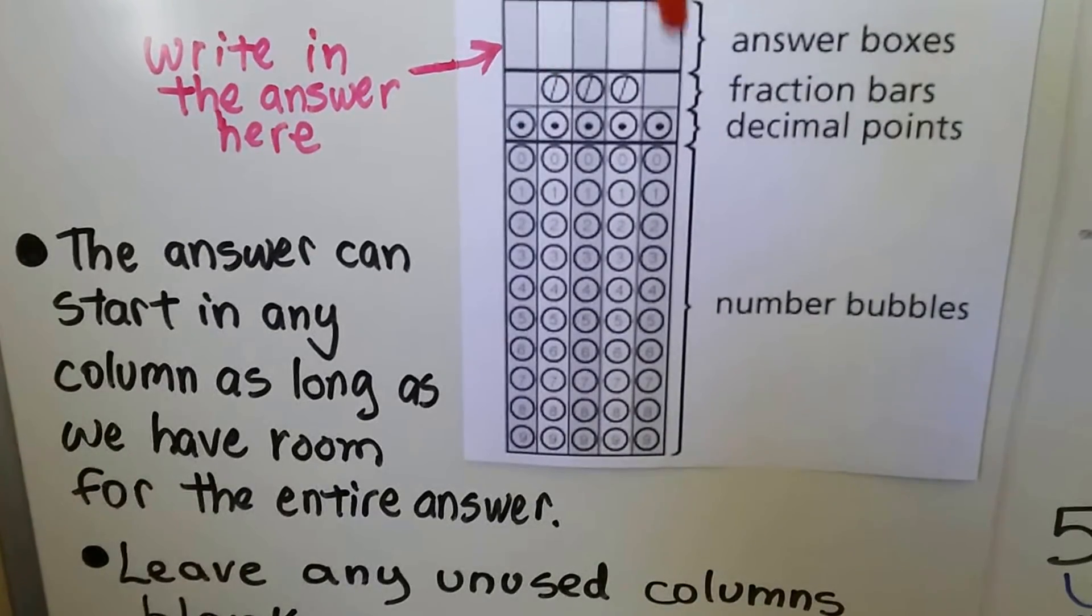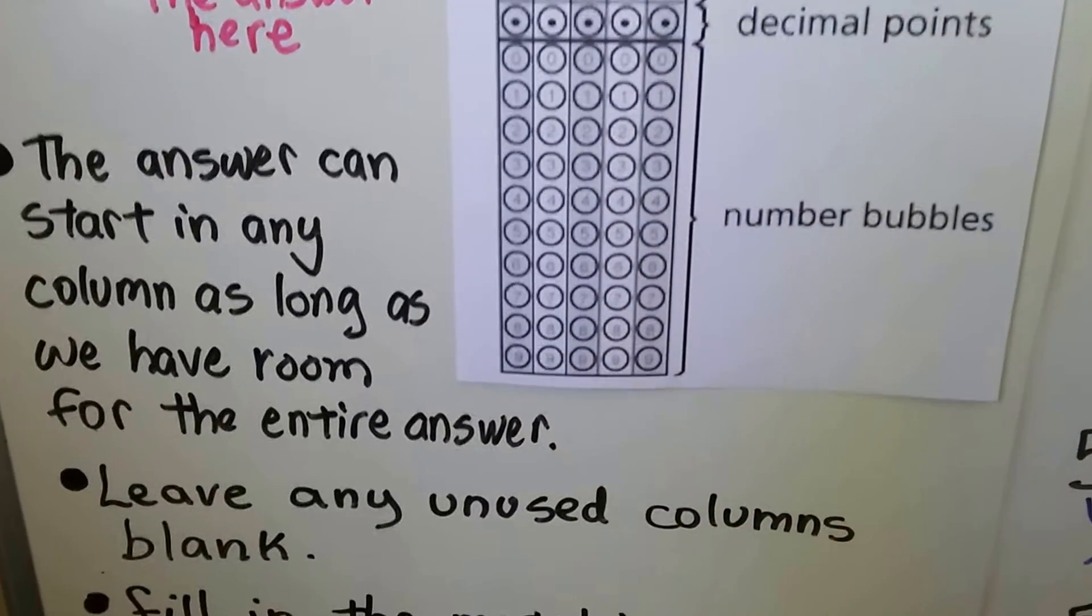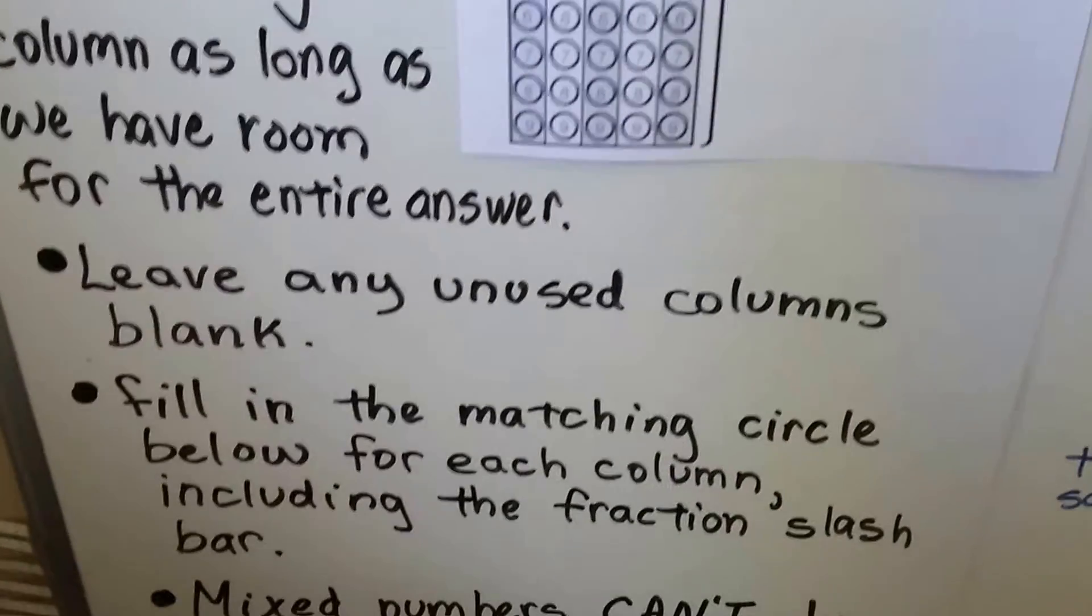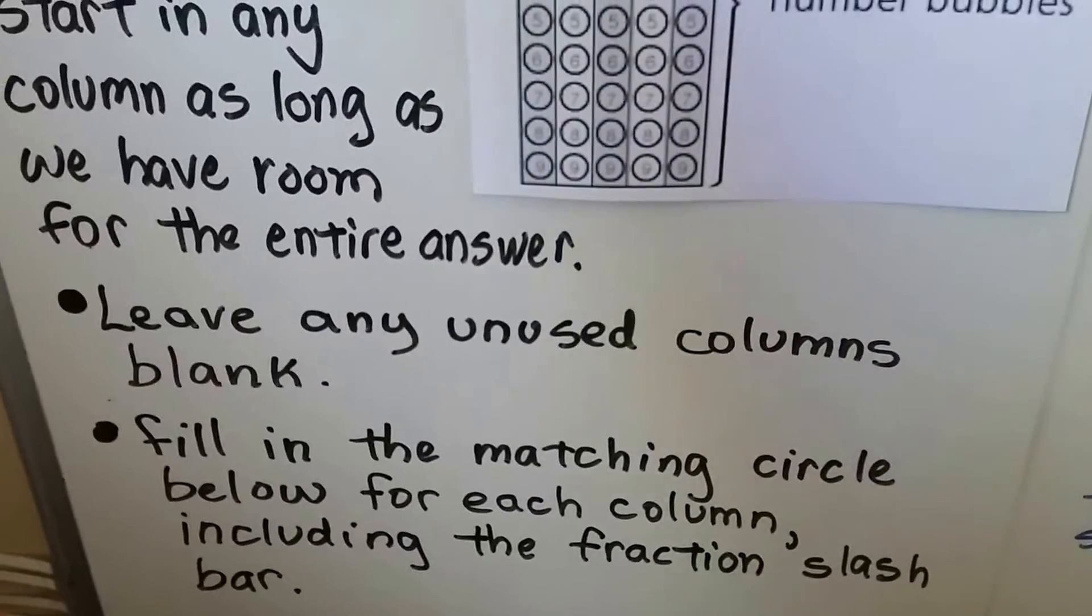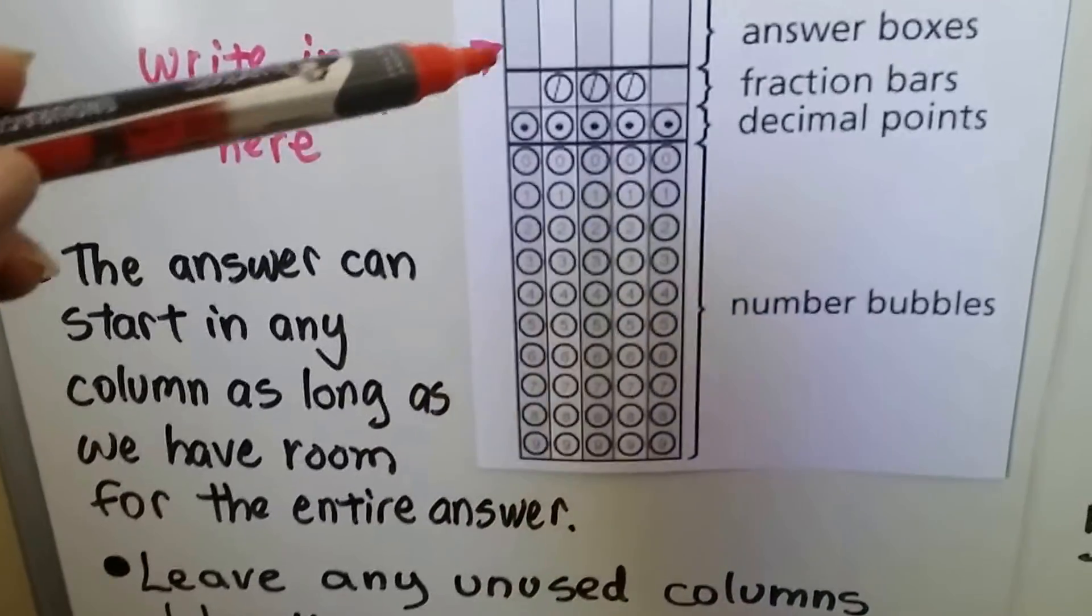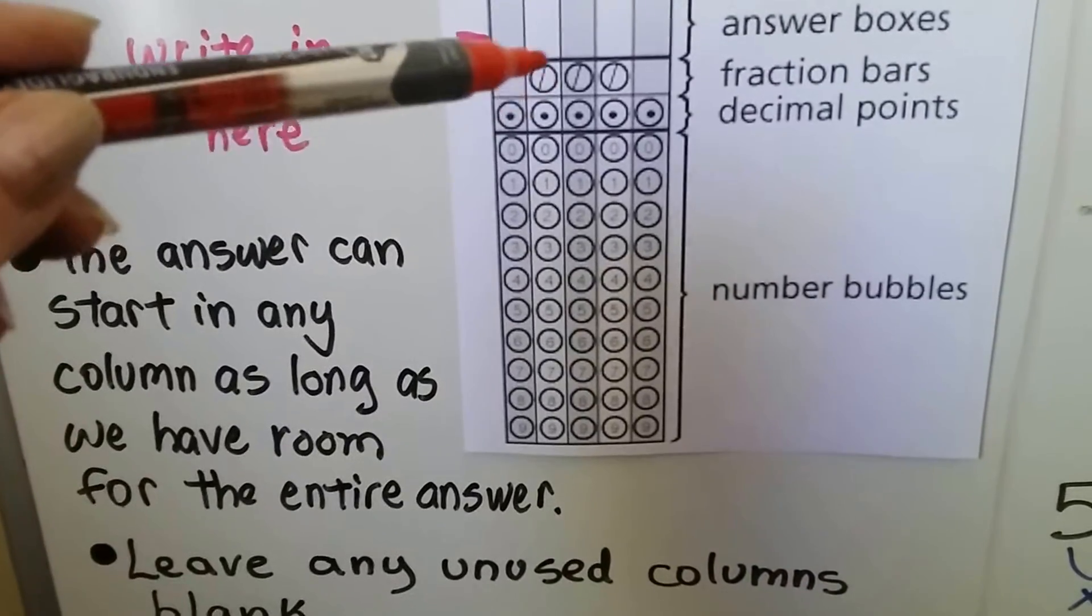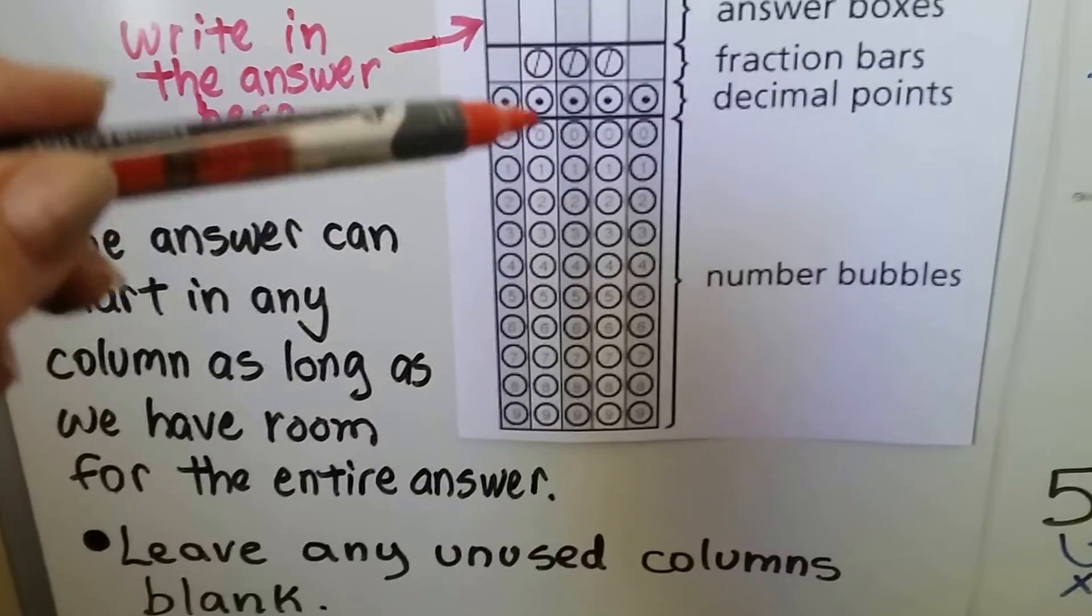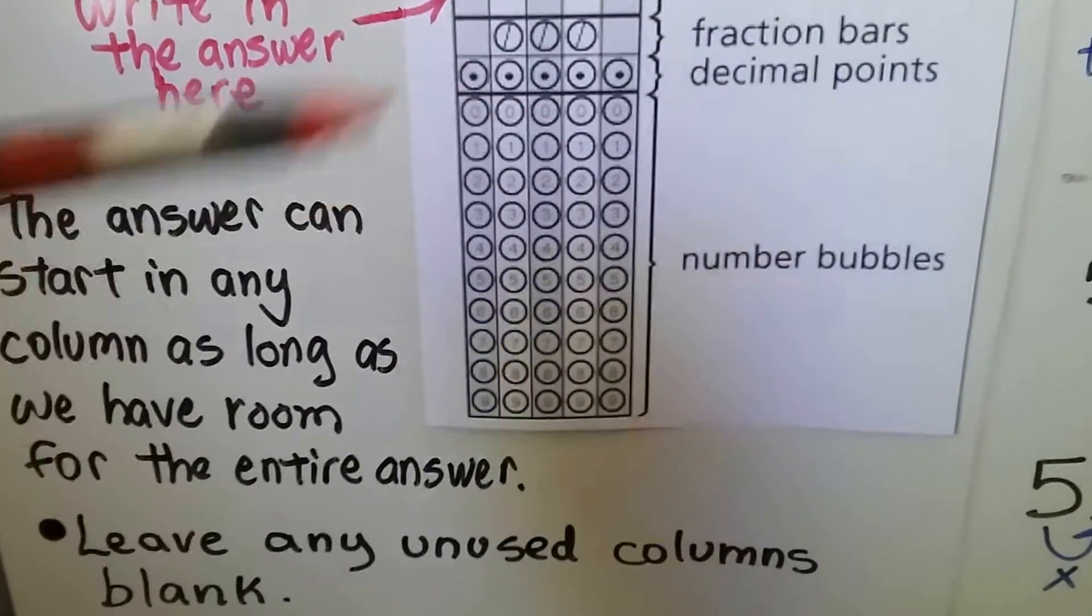Whatever is blank, we would leave those circles blank. Leave any unused columns blank. And we fill in the matching circle below for each column, including the fraction slash bar. So if we have a fraction, we're going to actually write that slash bar and fill in the circle for the slash bar. And that's the only thing for that column that's going to be filled in, but the numbers on either side.